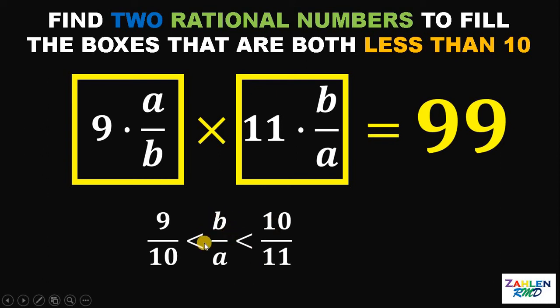So there are infinitely many B over A that is greater than 9 over 10 but less than 10 over 11. But at this point, we want at least one solution. So to do that, we will use the concept of median fraction. For further readings regarding median fraction, I will put the link in the description of this video. But at this point, let's apply the median fraction.